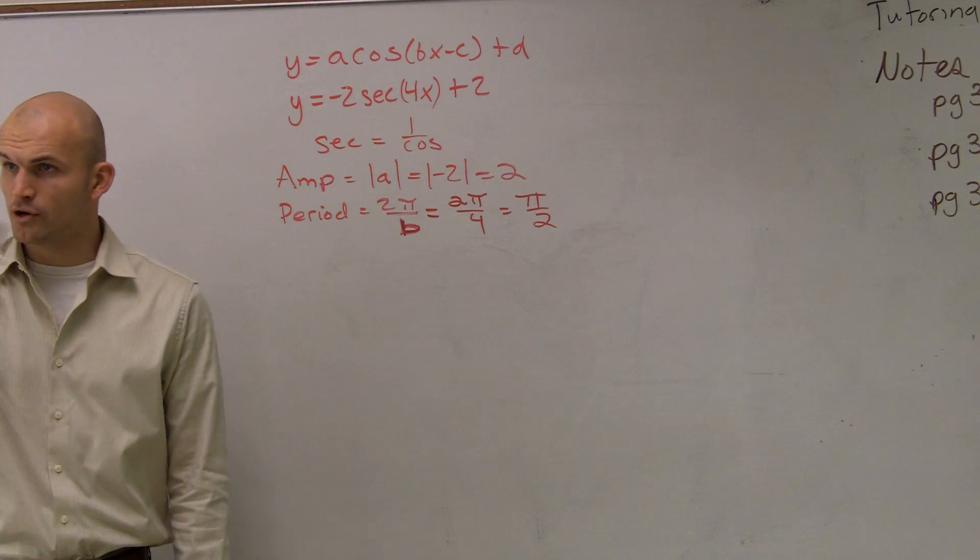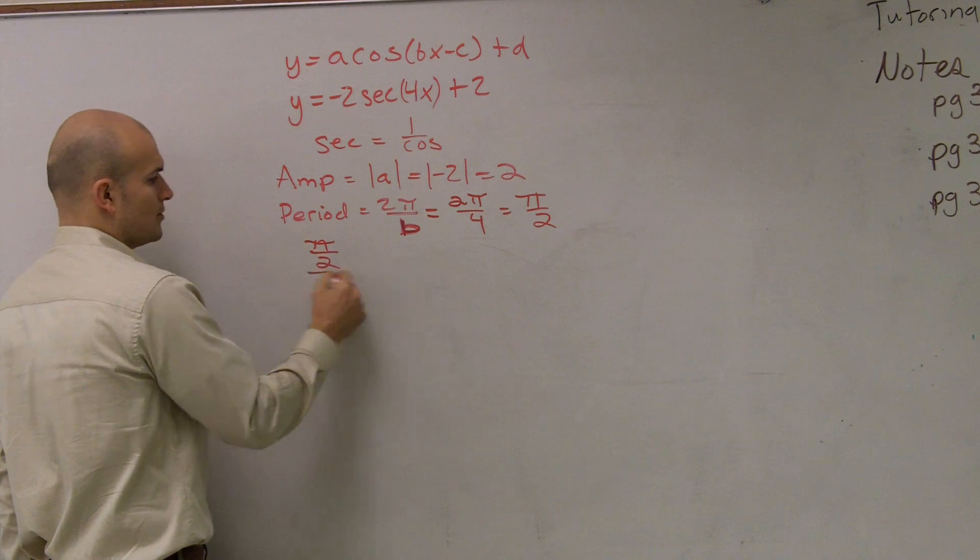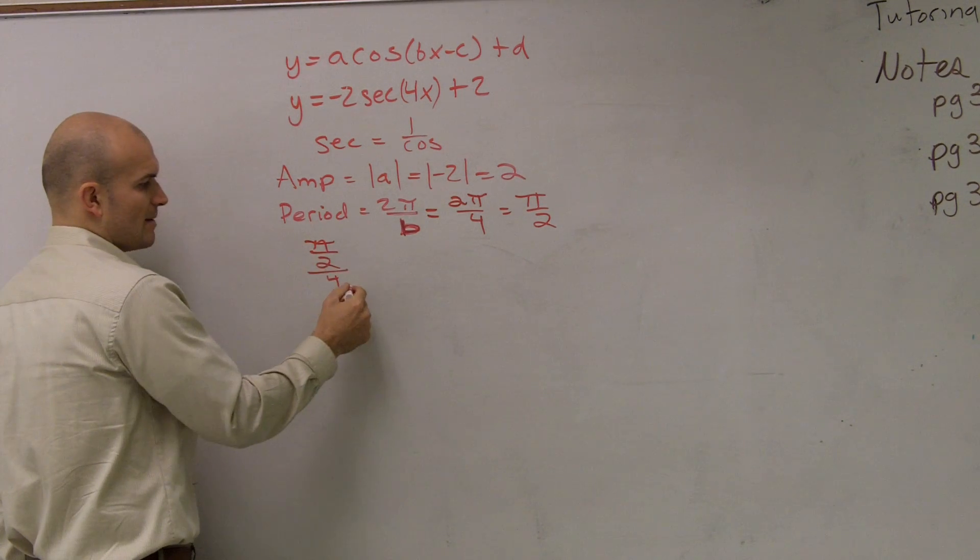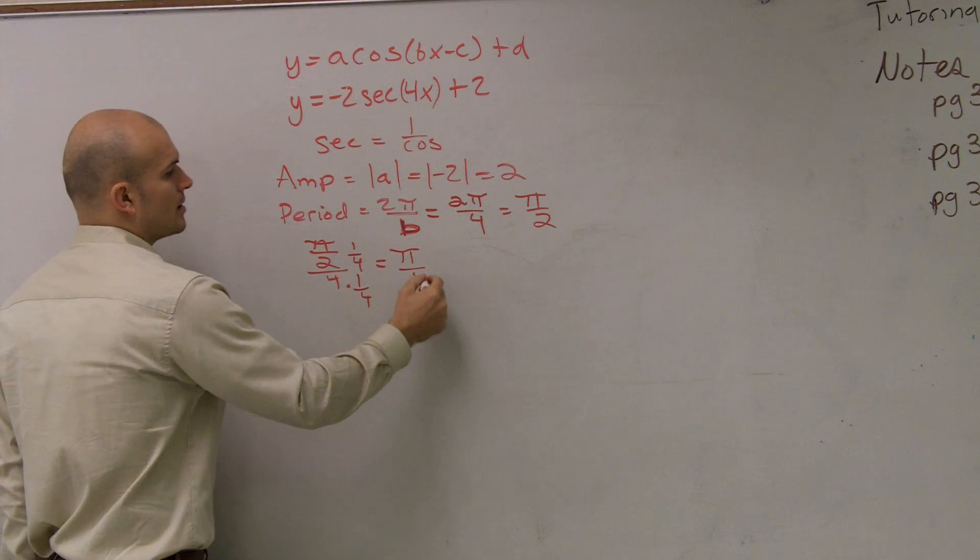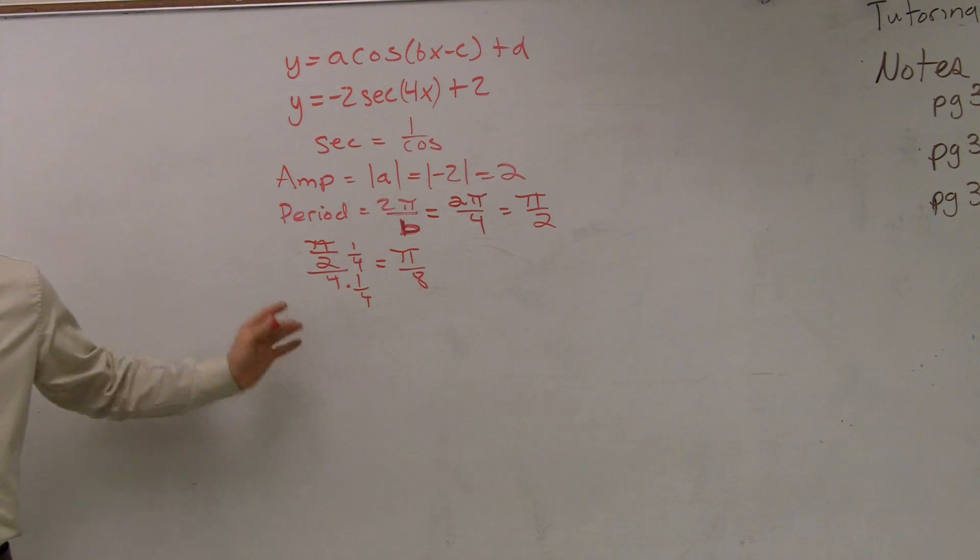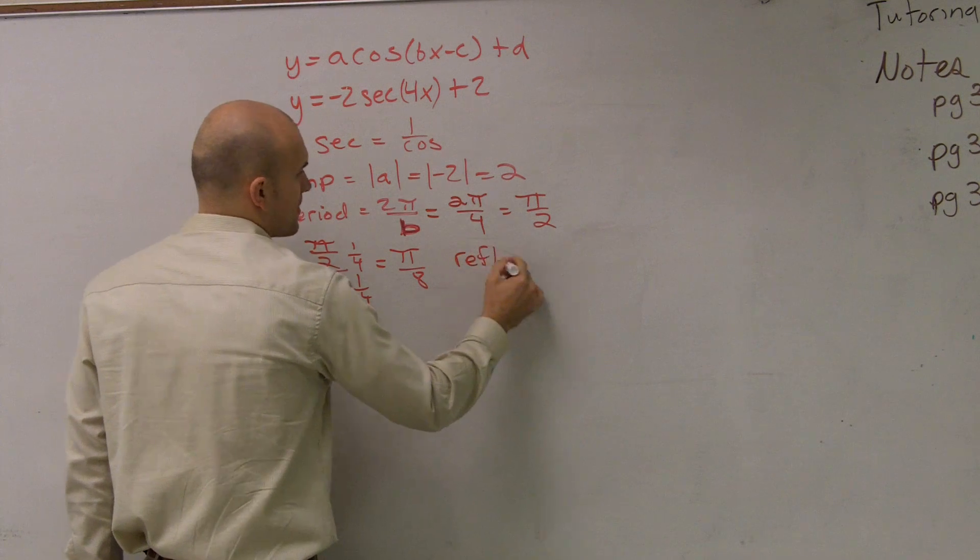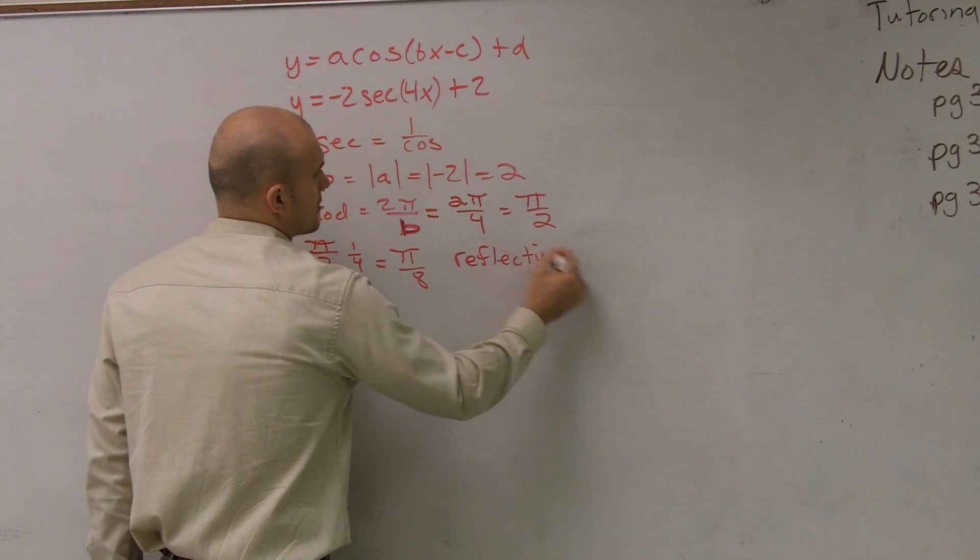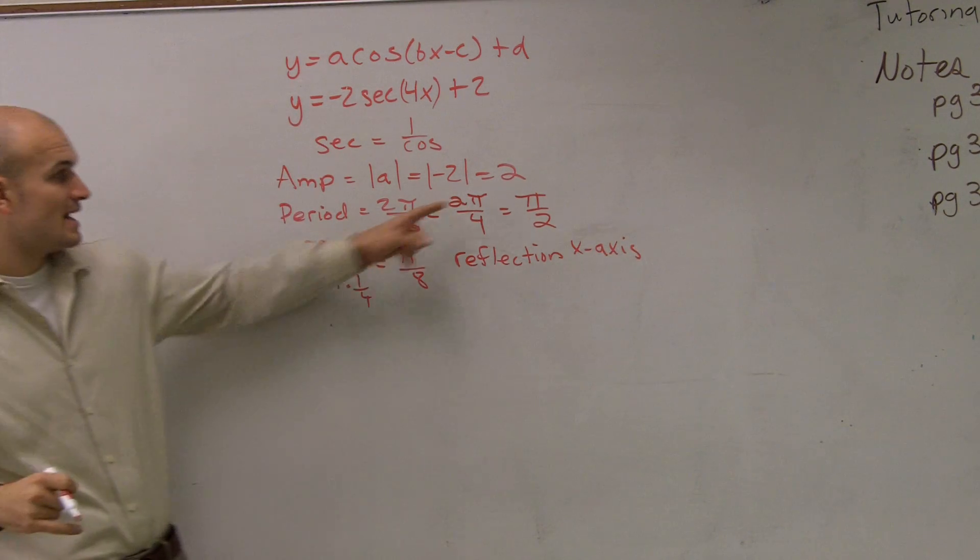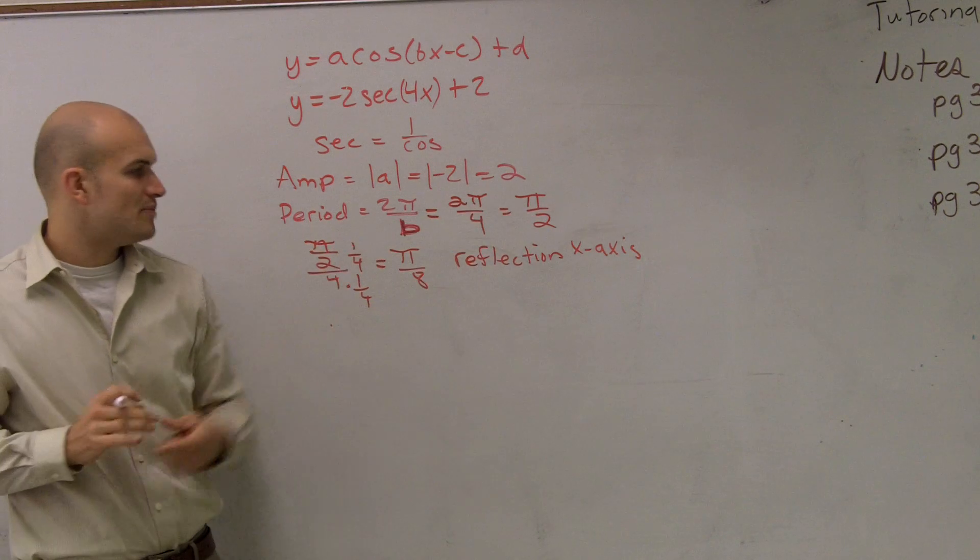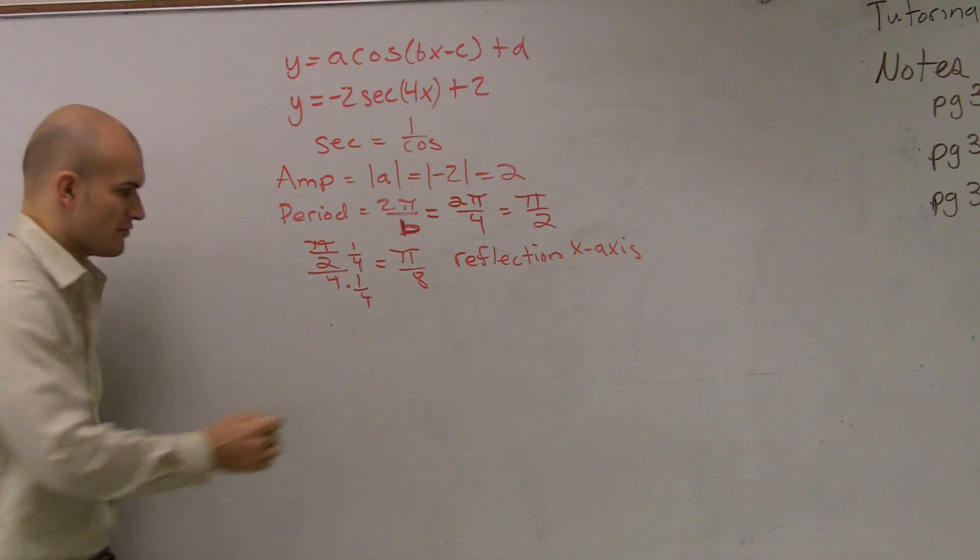Remember, I've spoken about the four important points for our one period. So we take π over 2 and divide by 4. We divide by 4 and multiply by the reciprocal. So our four important points are π over 8 between each other. So let's go ahead and get started graphing. And also notice, there is a reflection.